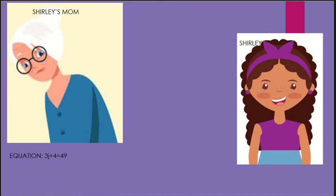The equation here is 3J plus 4 equals 49.